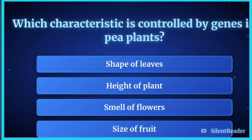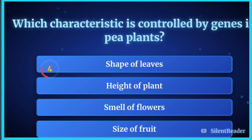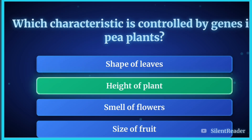Which characteristic is controlled by genes in pea plants? The correct answer is height of plant.